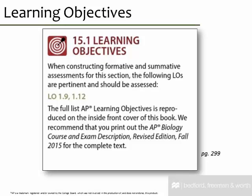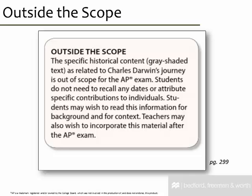Now let's take a look within the annotated teacher's edition. We provide you with a number of annotations around the student edition of the text. Each concept has a learning objectives annotation that shows you which learning objectives from the AP framework are covered within that concept. Outside the scope boxes provide you with an explanation of why you do not need to cover content that is grayed out in the narrative, where it contains content that is outside the scope of the AP framework.